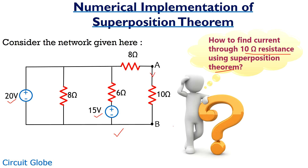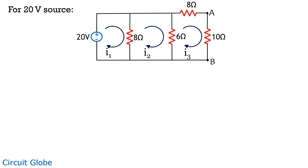Let's first consider the 20-volt source. As we know, a voltage source has an internal resistance of zero and a current source has an internal resistance of infinity. Therefore, a voltage source is replaced by a short circuit and a current source is replaced by an open circuit.